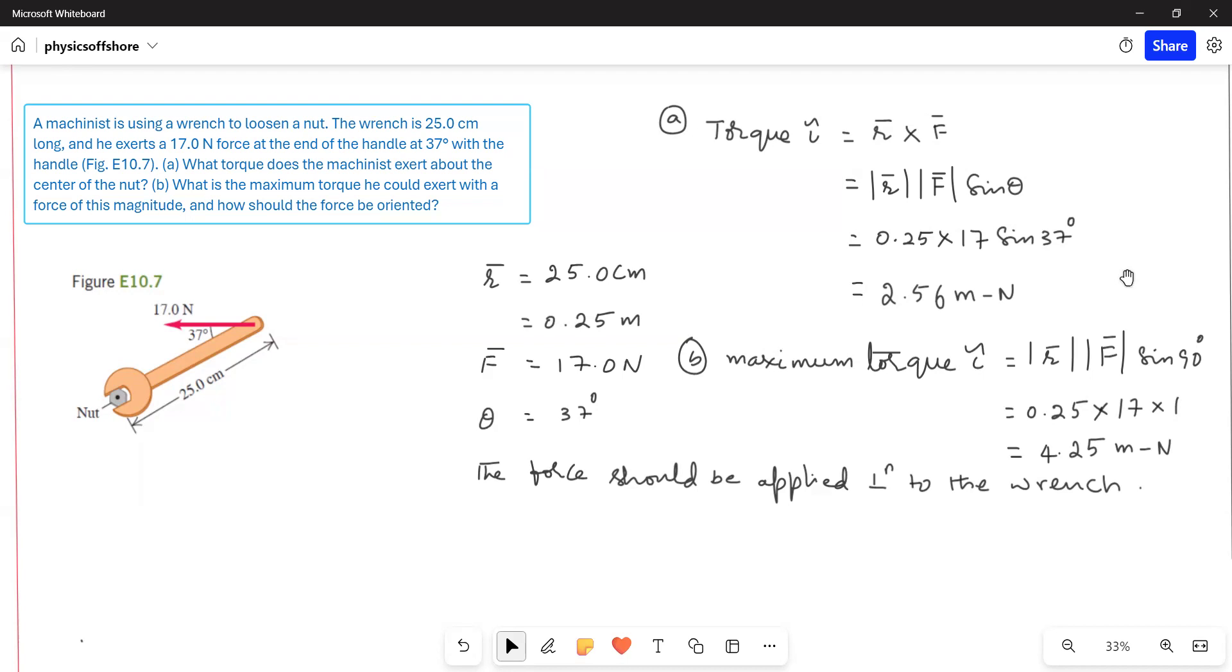We have to convert it into meters. So R bar is equal to 0.25 meters and force is given as 17 Newtons and the orientation is 37 degrees. So torque is equal to R cross F bar which is Rf sin theta. Plugging in the values, we get torque is equal to 2.56 meter Newton.